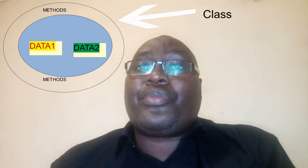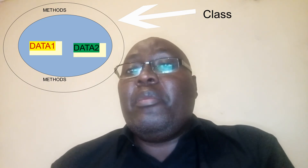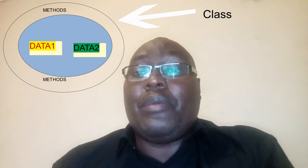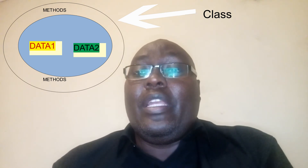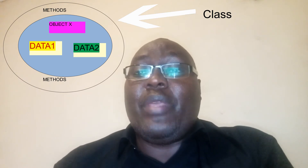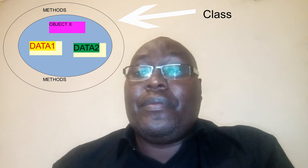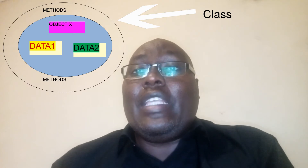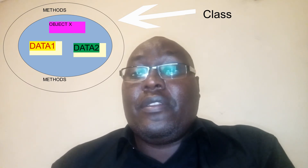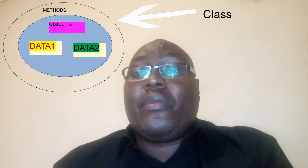In a class, the attributes are declared in the form of global variables, or sometimes can be declared as objects of other classes, because an object may contain other objects within itself. The behavior is declared in the form of methods. So in Java, we define the methods which form part of the behavior of the objects that will be created from this class.